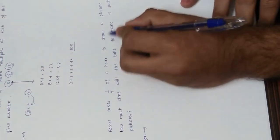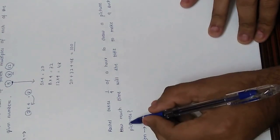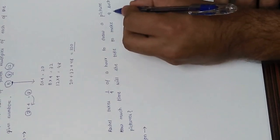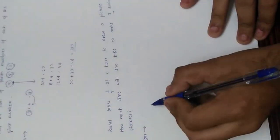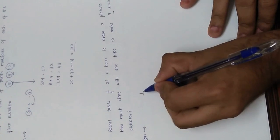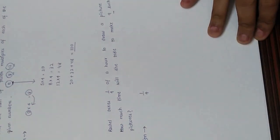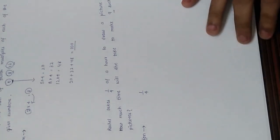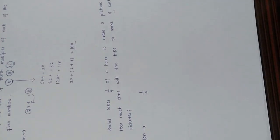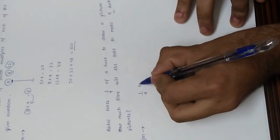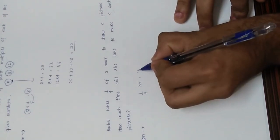Now let's take another question. Rachel takes one-fourth of an hour to draw a picture. How much time will she take to make nine such pictures? One-fourth of an hour is equal to 15 minutes.